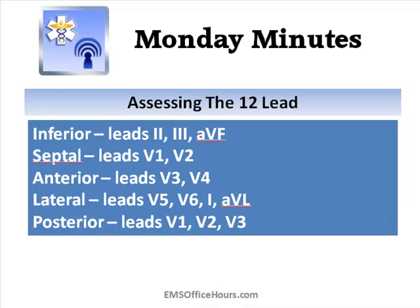What about the 12-leads? Just remember these key lead areas. Your inferior leads: 2, 3, and AVF. Your septal leads: V1 and V2. Your anterior leads: V3, V4. Your lateral leads: V5, V6, V1, and AVL. And your posterior, which are leads V1, V2, V3. These are what you're going to be looking at when looking for ST elevations, ST depressions, and reciprocal changes.